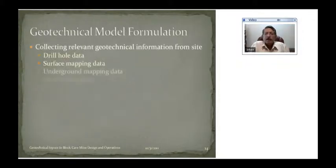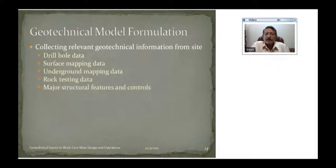Formulating the geotechnical block model basically involves collecting all the geotechnical information from the site, including drill hole data. We get some mapping data from the surface, some underground mapping data if you're lucky, and then all the boreholes, all the core that we get from the boreholes. We get them tested and get some rock testing, geomechanical properties of the rock. We also include in the geotechnical block model major structural features and controls, which need to be understood before we plan or lay out the mine.